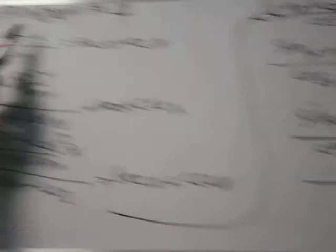Therefore, (tan x - cot x) / (sin x - cos x) equals sec x plus csc x.